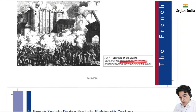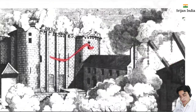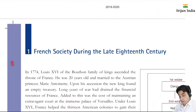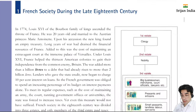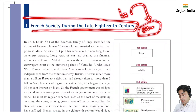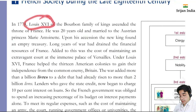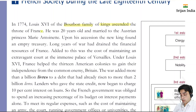Soon after the demolition of the Bastille, artists made prints commemorating the event. Now, French society during the late 18th century - every event has a backdrop that leads you toward it. In 1774, Louis XVI of the Bourbon family ascended the throne of France. He was 20 years old and was married to Austrian princess Marie Antoinette.